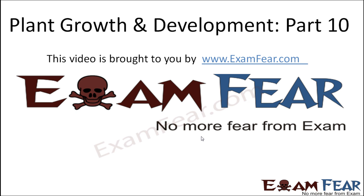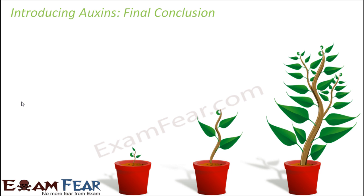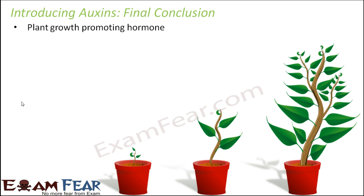Hello friends, this video on plant growth and development part 10 is brought to you by examfear.com. So now that we know what auxins are, let us look at the final conclusion of what we know auxins as today. These are the plant growth promoting hormones. They are synthesized at the shoot tip in the presence of light.